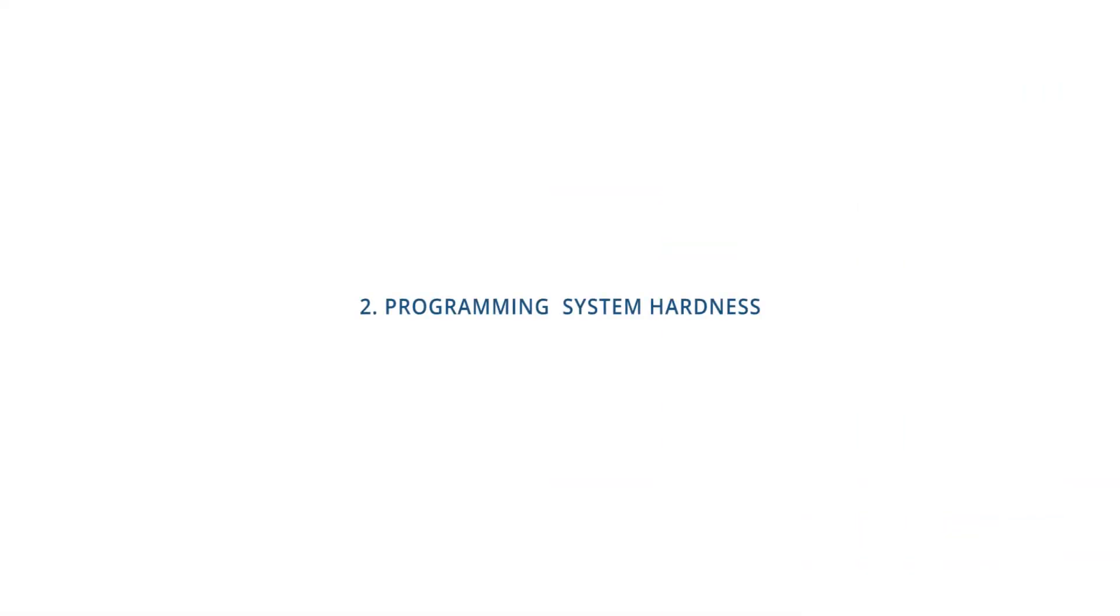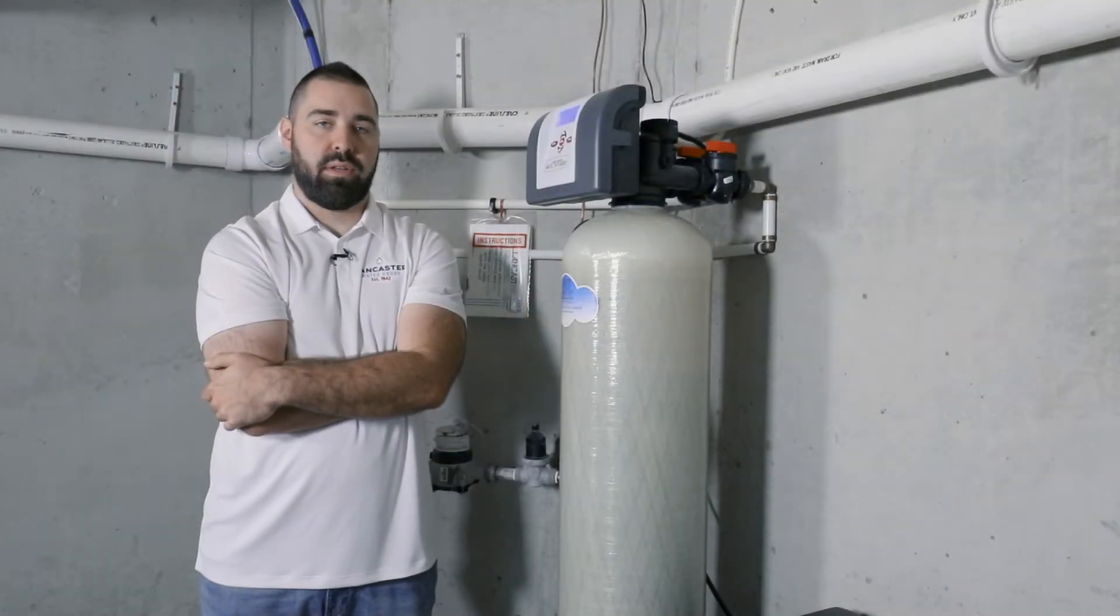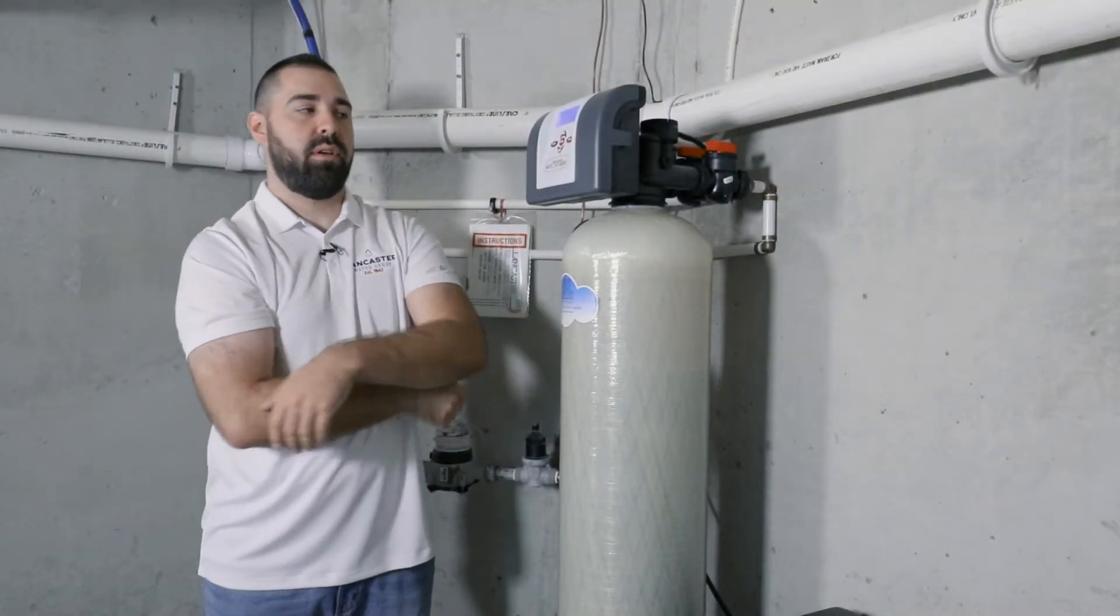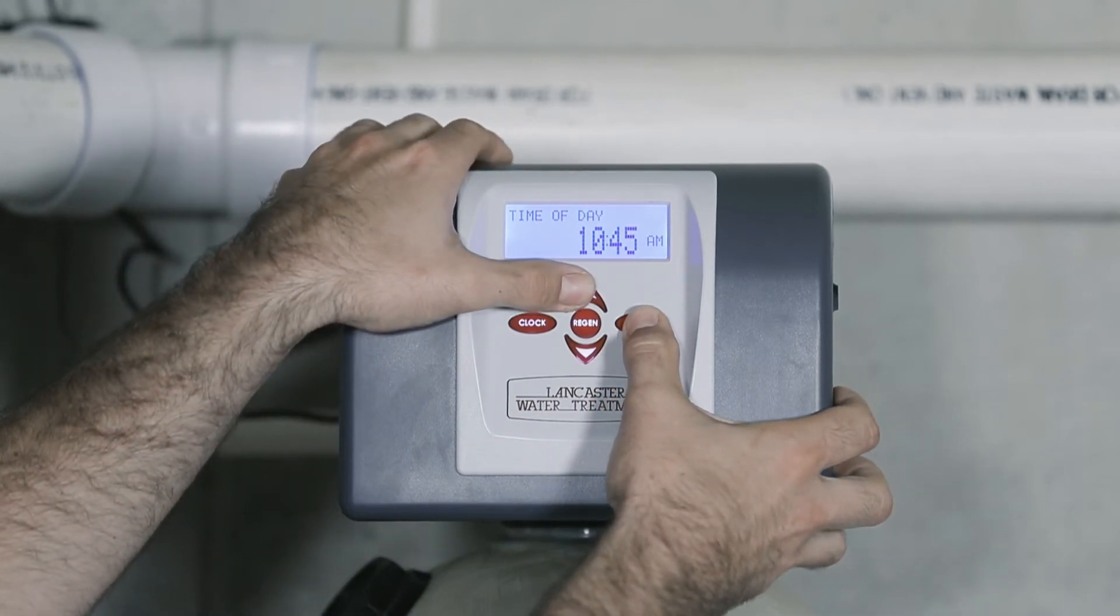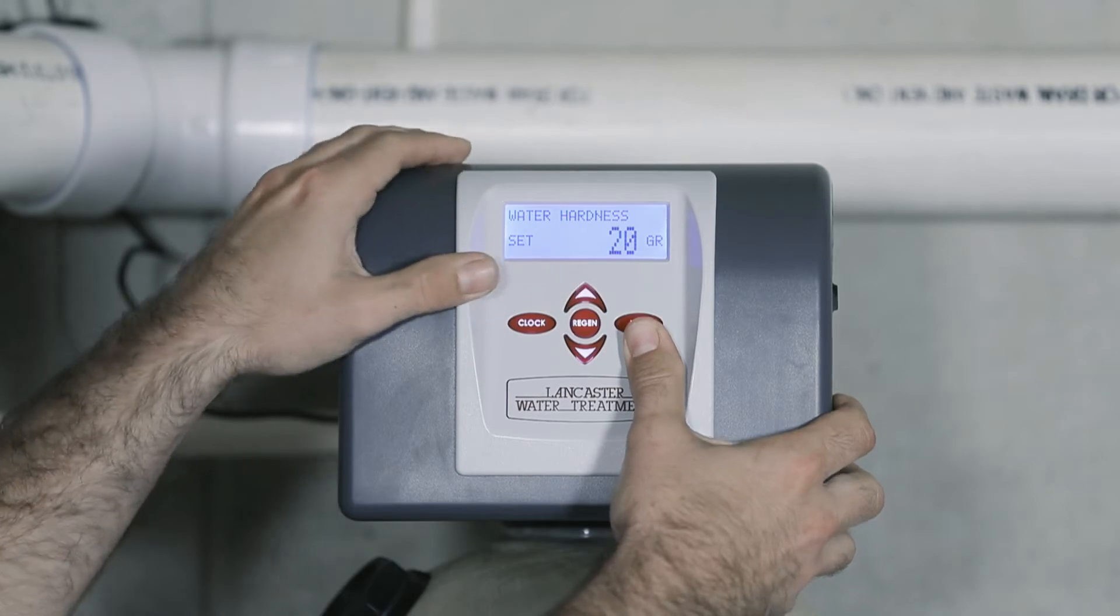Now we will set the hardness. The hardness should be set for what your water is tested at for its hardness. Press and hold the next and up button together for three to five seconds. The screen should change.